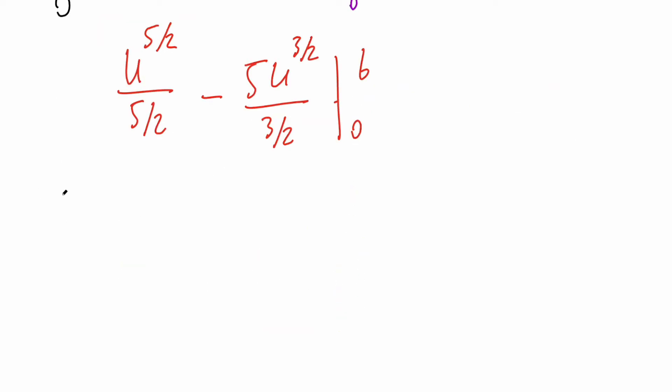Now we can rewrite and swap. If we're dividing by 5/2, that's the same as multiplying by 2/5. We replace u with what we have: 6 raised to 5/2, minus, because of this piece, 5 divided by 3/2. We can rewrite it as 5×(2/3), replacing u with 6, so 6^(3/2).